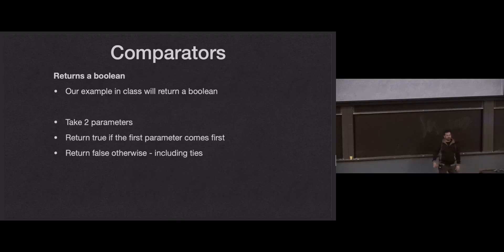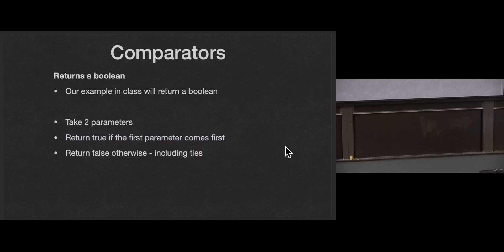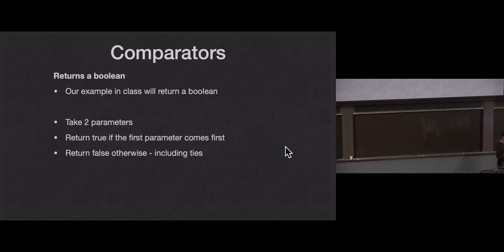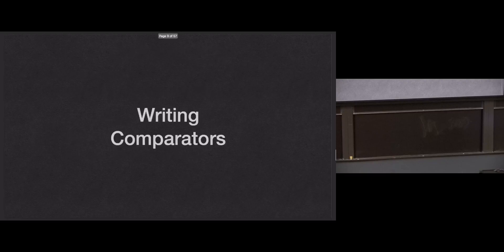We want to use the Boolean flavor of comparator. We're going to take two parameters and return true if the first parameter comes before the second and false otherwise, including ties. This is the style we want to build, as opposed to the int style common in Java. A lot of built-in types have that compareTo method if you want to compare two objects, but we're going to build the Boolean style — a little bit simpler.